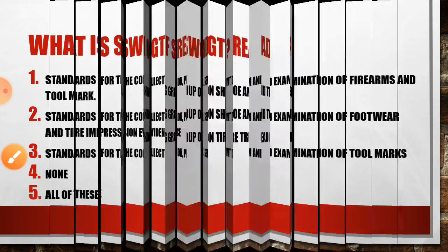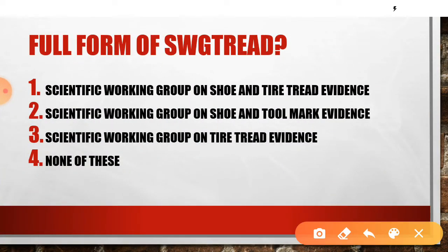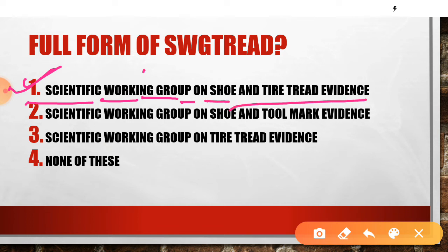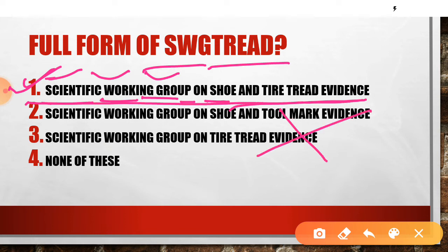Now let's look at the full form of SWG Trade. The full form is: S for Scientific, W for Working, G for Group — on shoe and tire trade evidence. So its complete full form is Scientific Working Group for Shoe and Tire Trade Evidence. All other options are incorrect. Note this down in your copy.